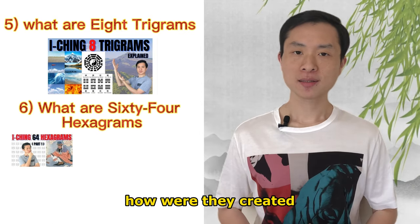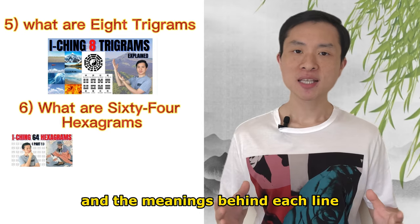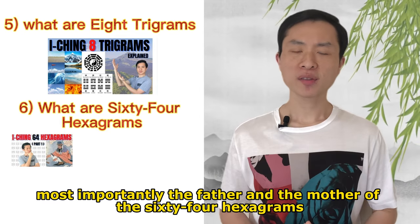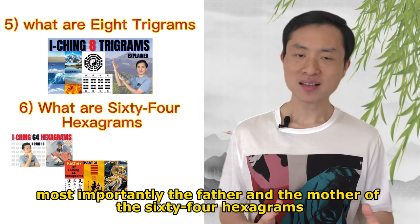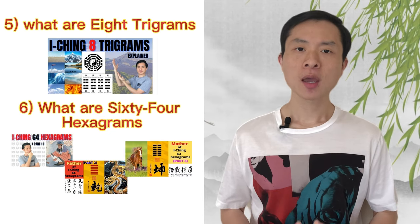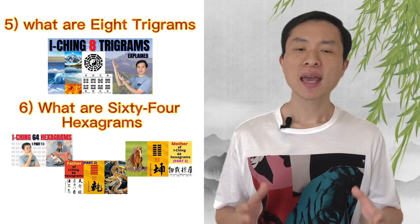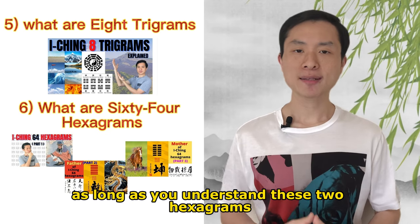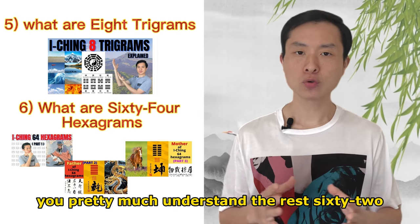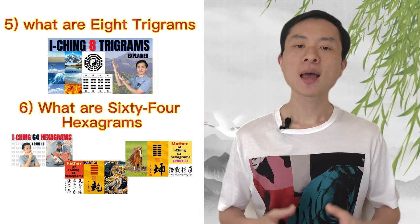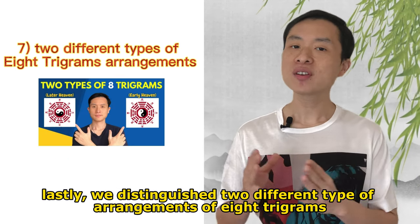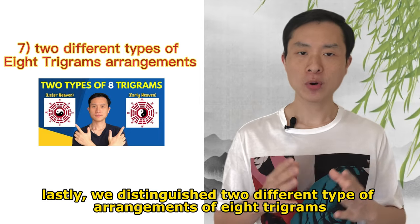We covered how the hexagrams were created, who created them, and the meanings behind each line. Most importantly, the father and mother of the 64 hexagrams — Qian and Kun. As long as you understand these two hexagrams, you pretty much understand the rest 62. Lastly, we distinguished two different arrangements of the eight trigrams.